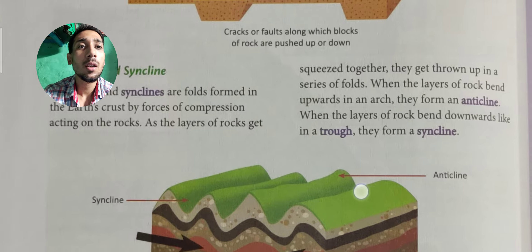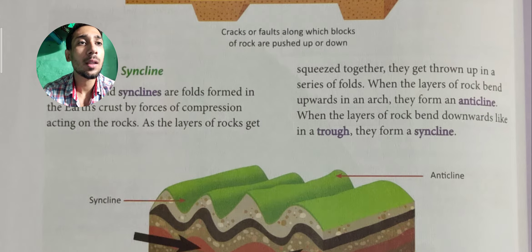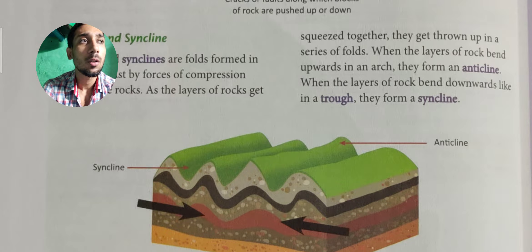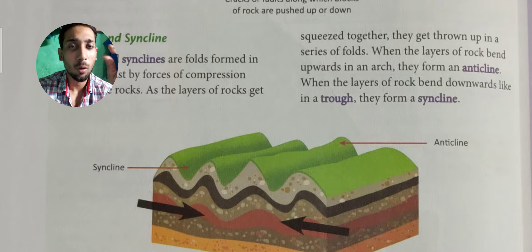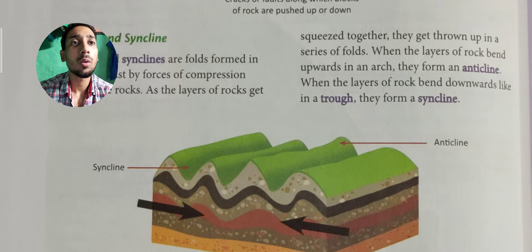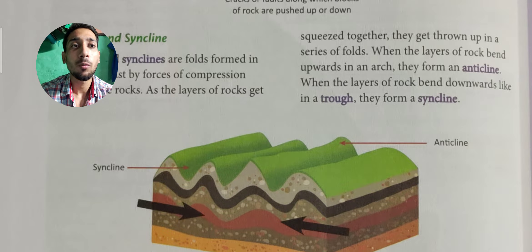As the layers of rock get squeezed together, they get thrown up in a series of folds. To understand 'squeezed,' imagine taking a sponge, putting it in water, removing it, and then squeezing it — water comes out. Similarly, when rock layers are compressed and squeezed together, they fold up into a series of positions.